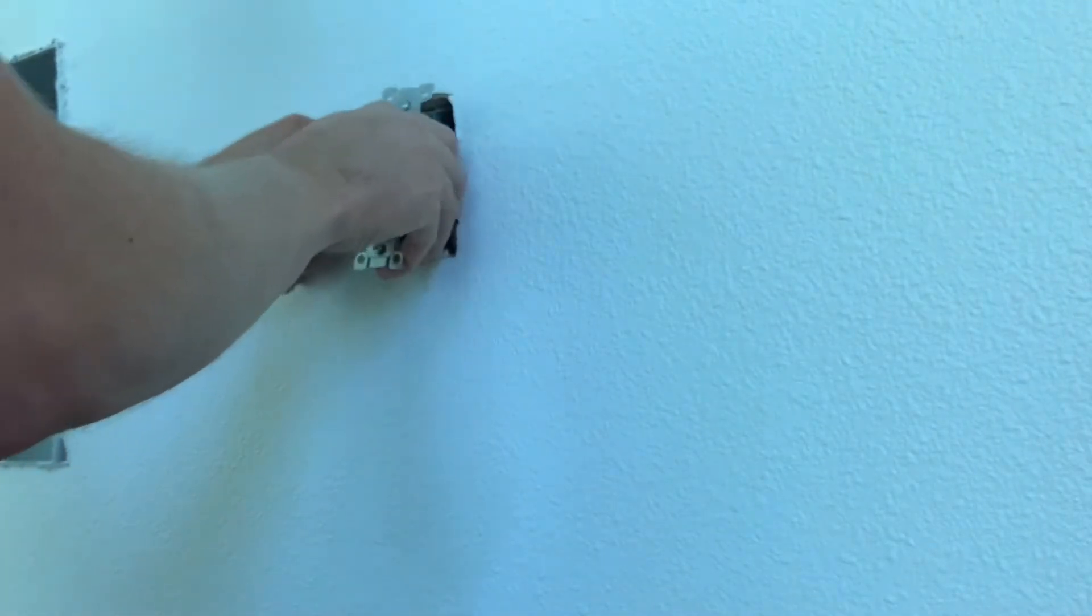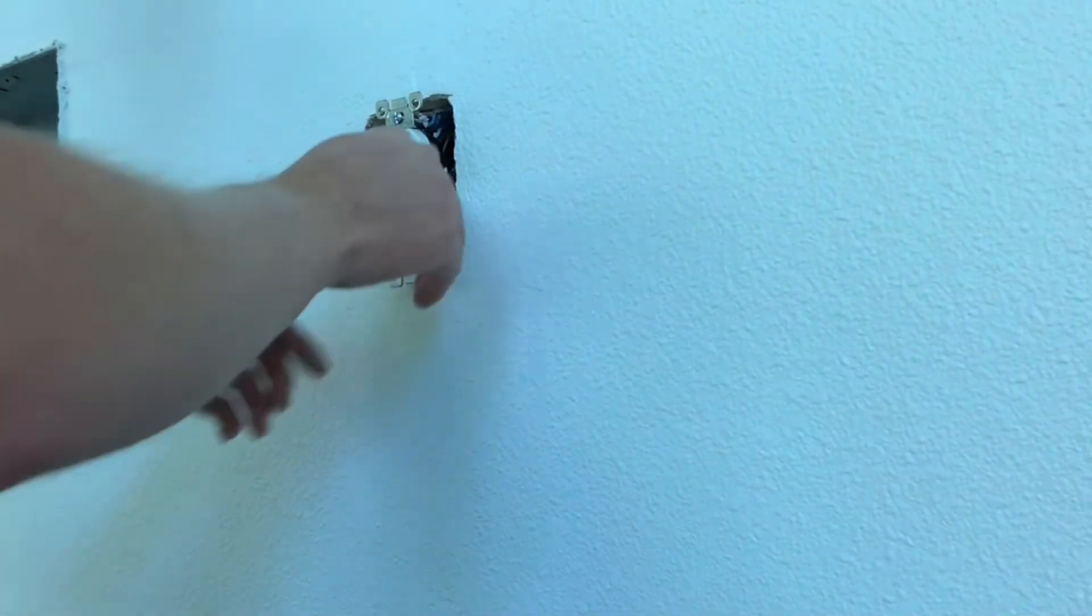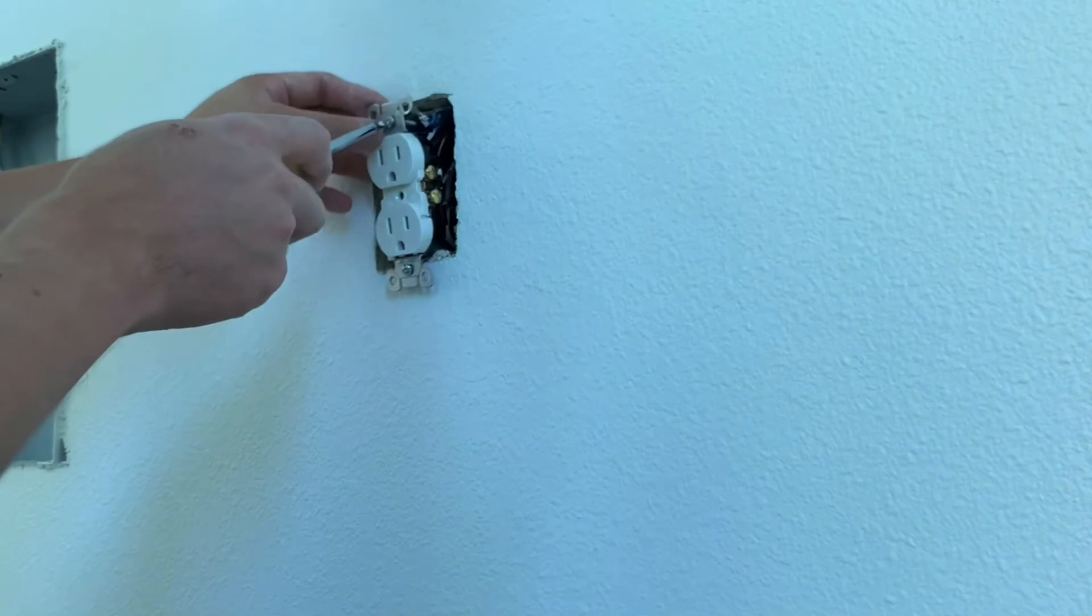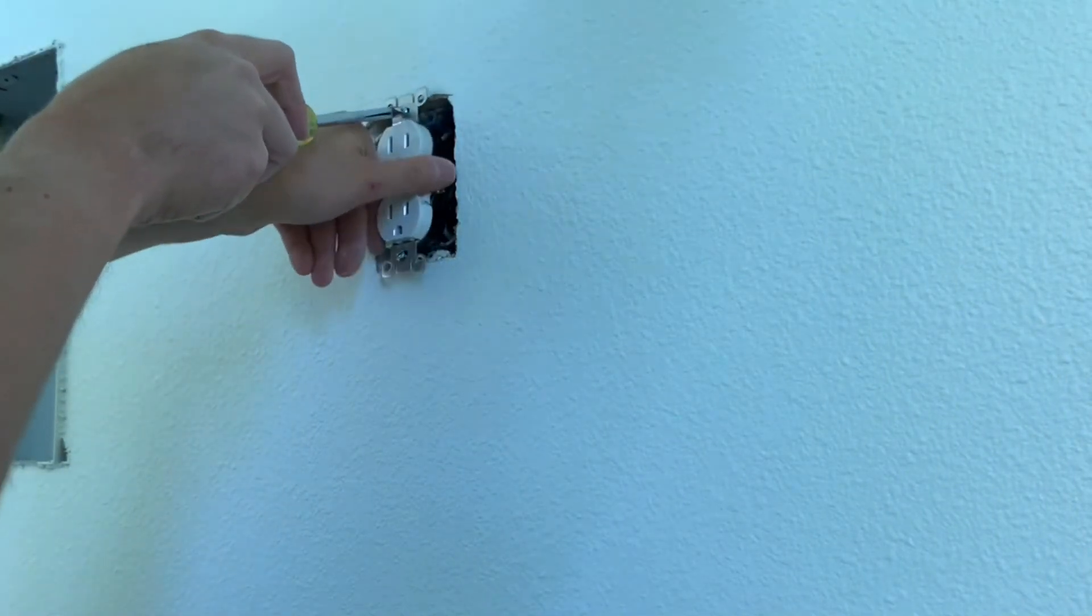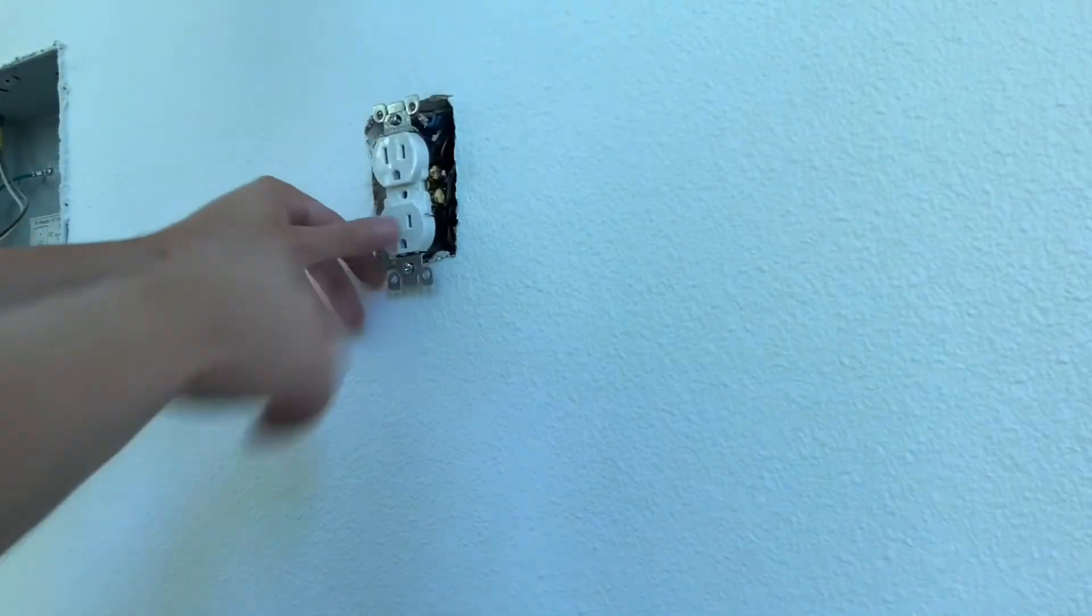And then push it down, and then just make sure your ground wire—I'll show you that in a second. But you're just going to want to screw this down with your screw gun. I don't have one with me like I said, and this box is too deep in the wall, but you're going to screw these screws on the device into the box.